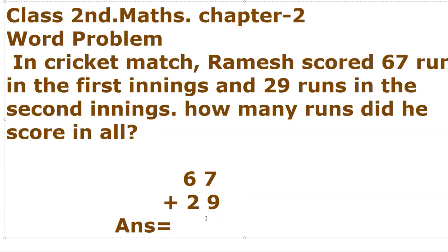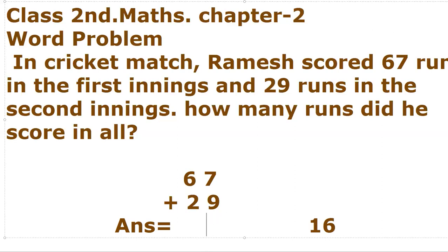First, add the ones place: 7 plus 9. After 7, count 9 steps: 8, 9, 10, 11, 12, 13, 14, 15, 16. So we get 16. We write 16 outside because we don't write both digits in the answer box. So 6 will be placed here and 1 will be the carry.